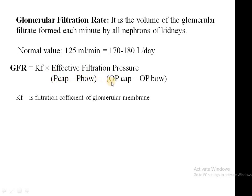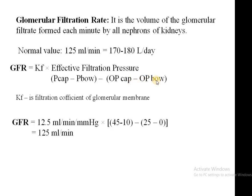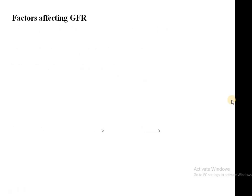Subtracting the oncotic pressure of the capillaries minus the oncotic pressure of Bowman's capsule, and putting in the values — Kf is the constant 12.5 ml per minute per mmHg — using the different hydrostatic pressures in the capillary and Bowman's capsule and the oncotic pressures, the result comes out to 125 ml per minute. Remember this for MCQs.